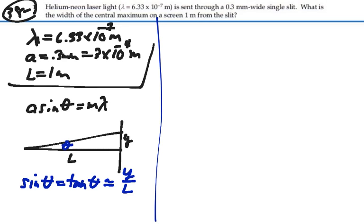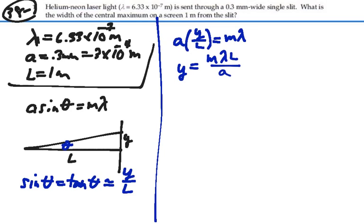So it would be true that a times the sine of theta, which is y divided by l, would be equal to m lambda. In other words, y is going to equal m lambda l over a. That would be the position of our minima on the screen.